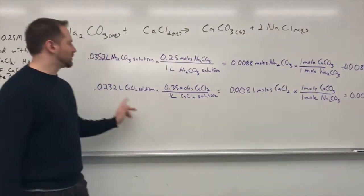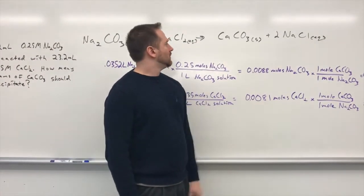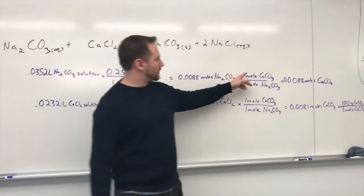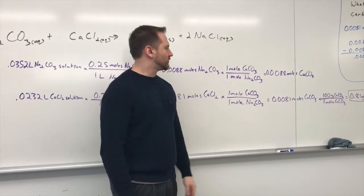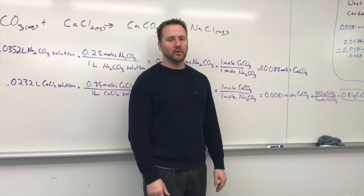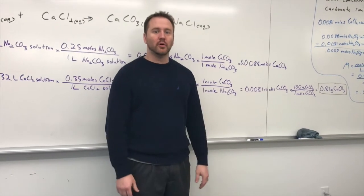Now we do the same thing with the calcium chloride, and we see the number of moles of calcium chloride we have. Then, since this is all a one-to-one-to-one ratio, so you get one mole of calcium carbonate, one mole of sodium carbonate, so we're able to produce 0.0081 moles of calcium carbonate, which would be our theoretical yield in moles.